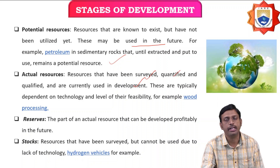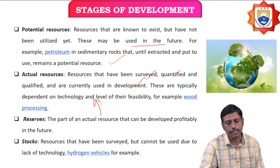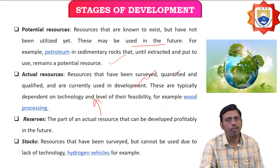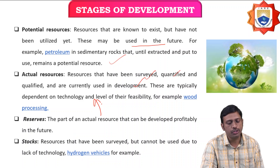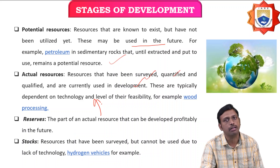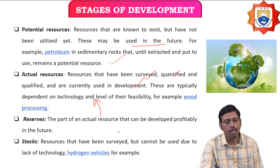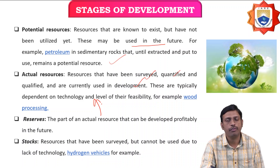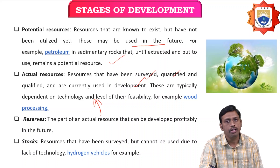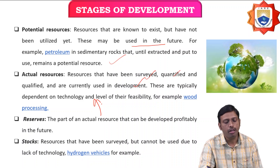Reserve is a part of the actual resource that can be developed profitably in the future. Stocks are resources that have been surveyed but cannot be used due to lack of technology. For example, hydrogen vehicles come under stocks.